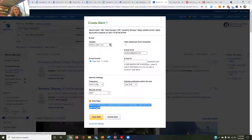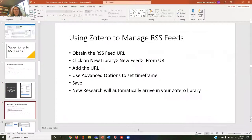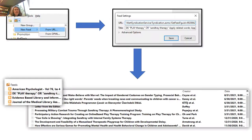The other thing I can do is grab this RSS feed URL and use Zotero. Zotero is a bibliographic management system, billed as a personal research assistant, and it can manage RSS feeds. We have our RSS feed URL ready. I click 'New Library,' then 'New Feed from URL,' add the URL, set up the time frame, and it will all appear.